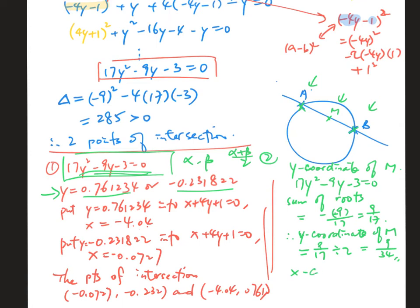For a more advanced question, finding the x-coordinate of M: since M lies on the line, substitute y = 9/34 into x + 4(9/34) + 1 = 0. Solving gives x = −35/17.